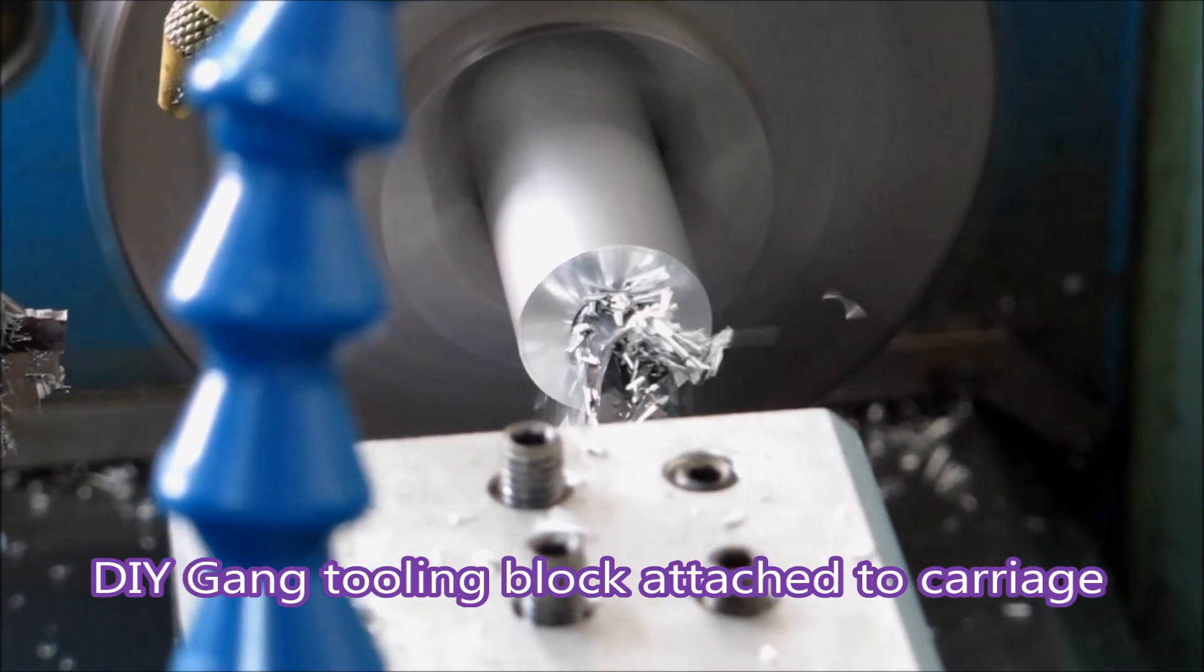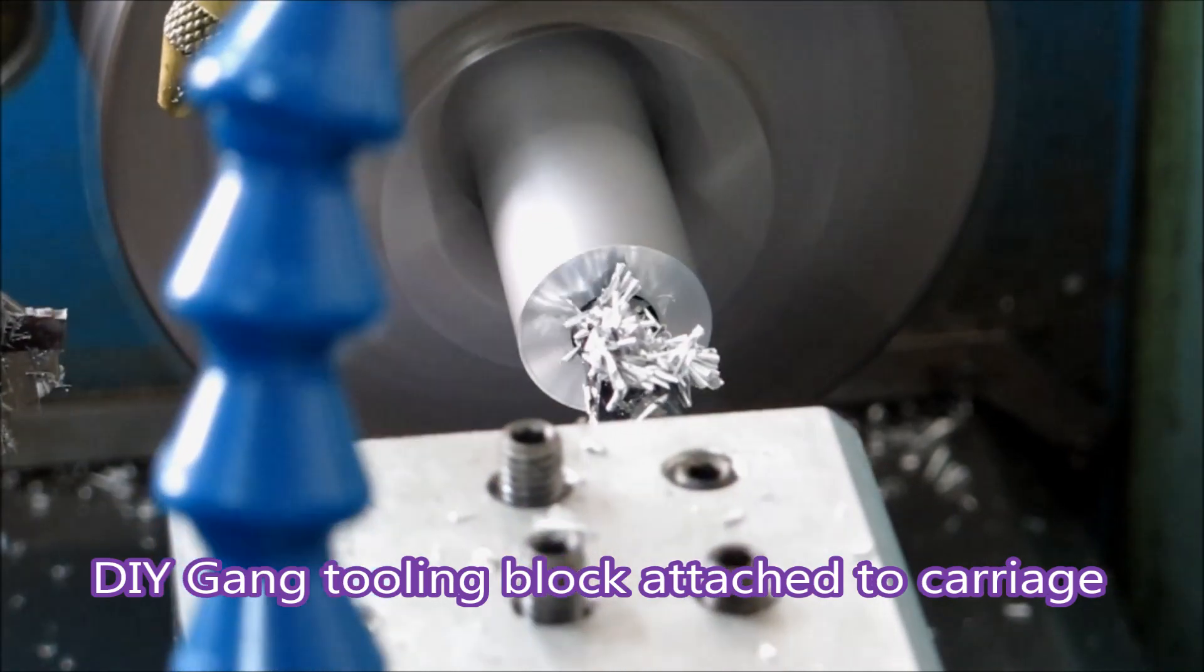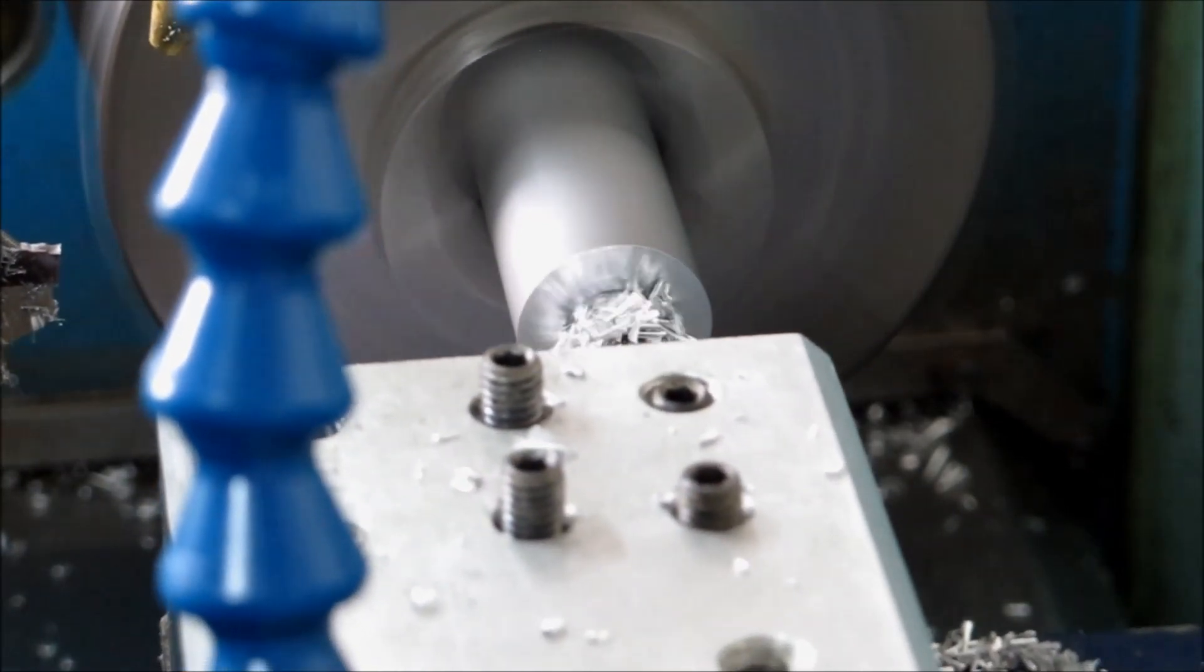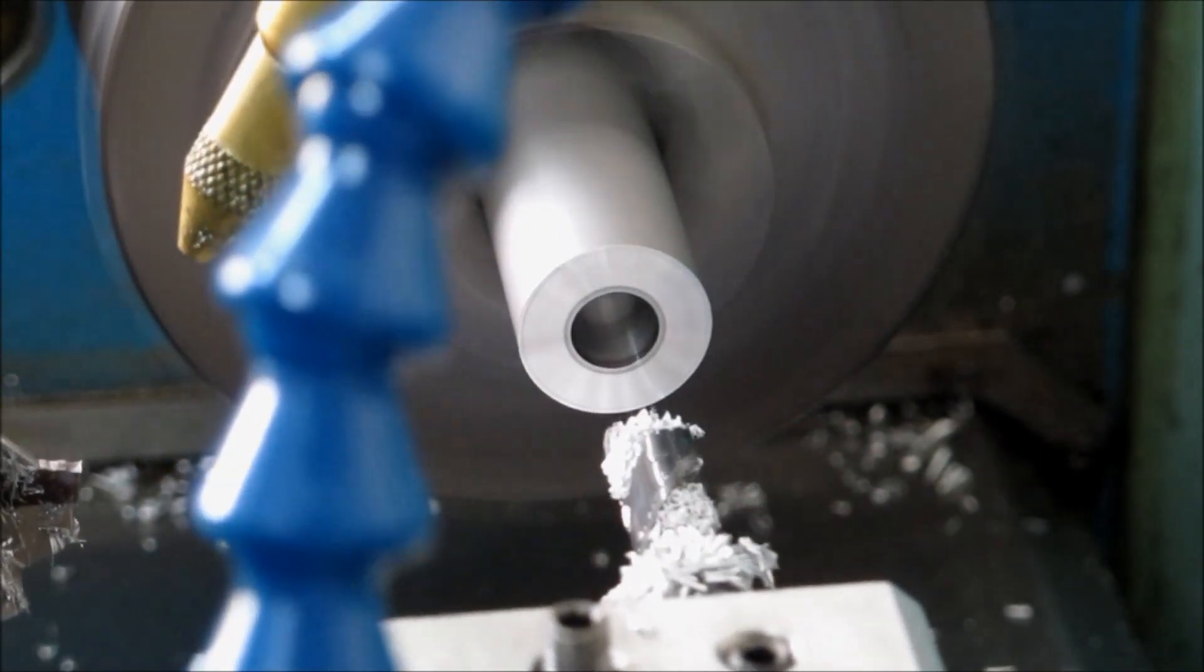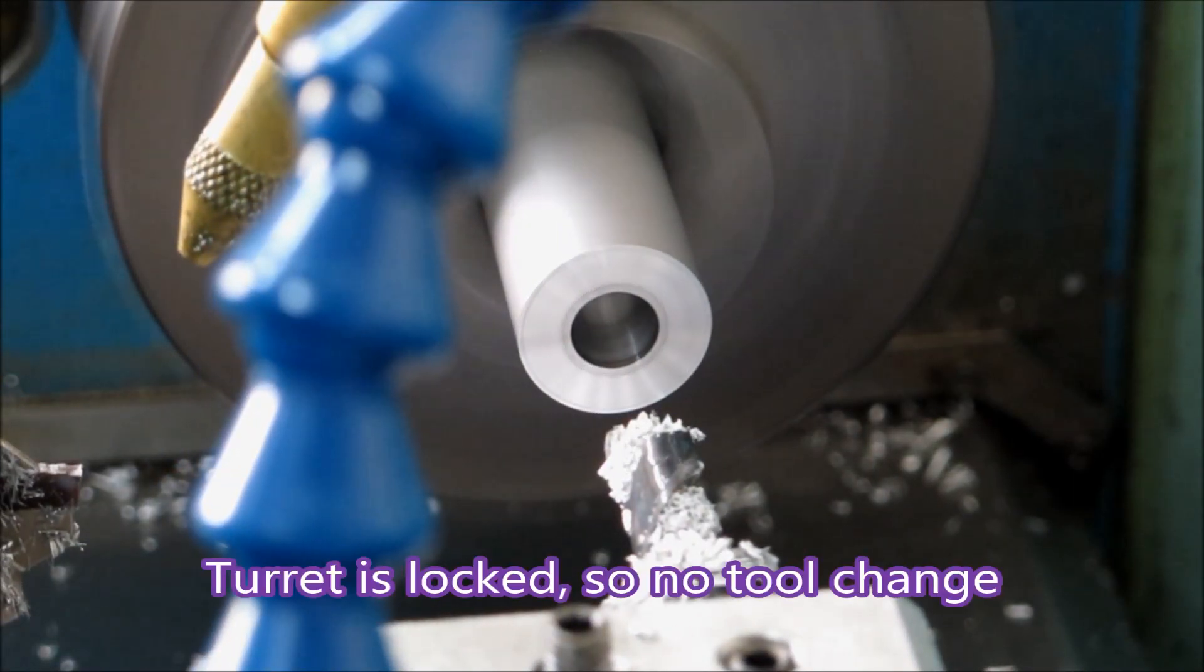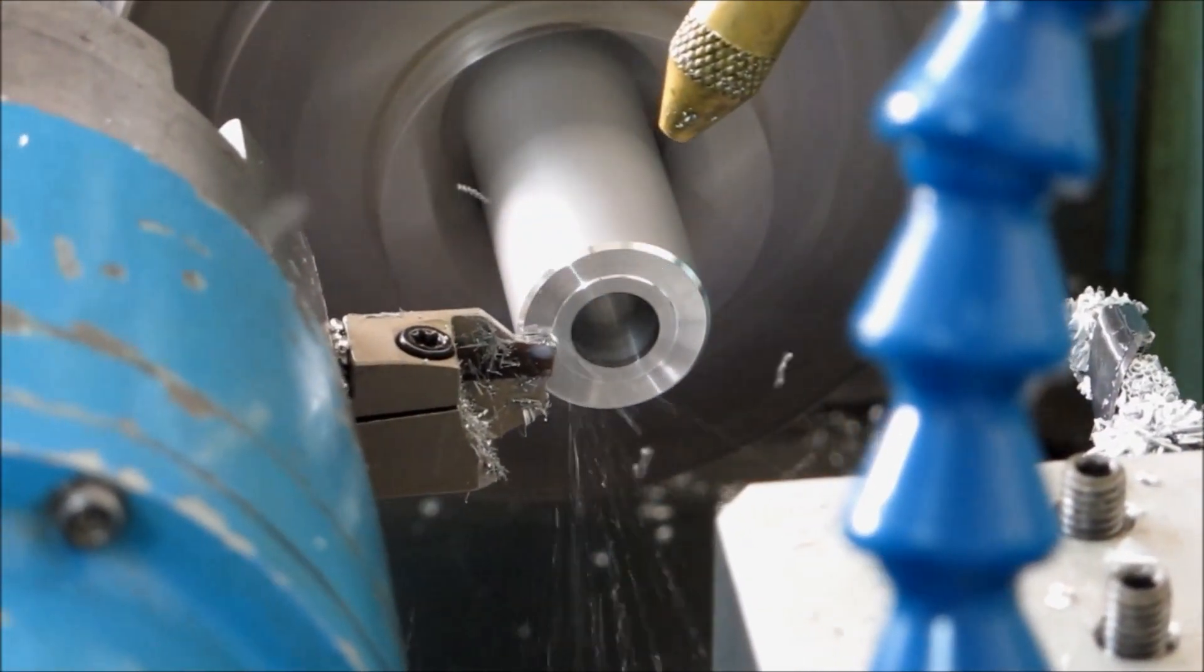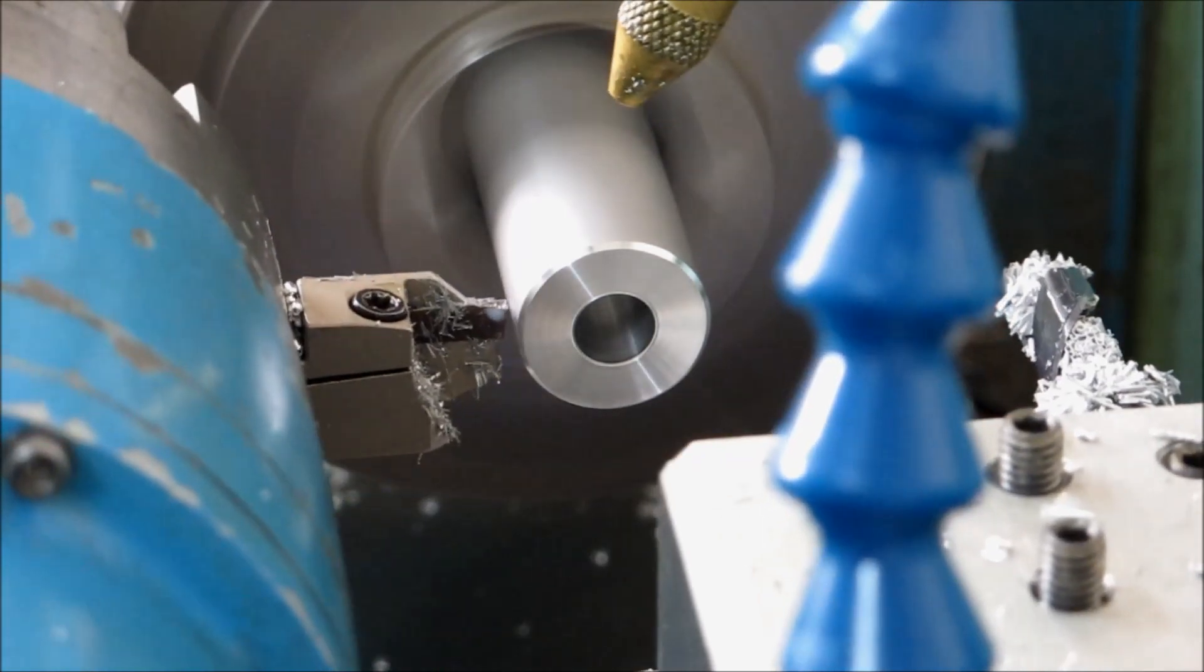That tooling block is screwed and doweled to the carriage, so I know it always goes back on in the same place. Can't use it for some jobs - it gets in the way. That delay there is the spindle speeding up to 3000 from 2112.